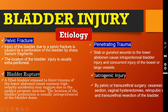Coming to the etiology, pelvic fracture can cause injury to the bladder. Fragments of this bone can perforate the bladder and cause bladder rupture. Usually the location of bladder injury is extraperitoneal. Bladder rupture because of blunt injury to the abdomen — when the bladder is full, it is most common in high-velocity accidents, and the bladder may rupture due to sudden pressure increase.